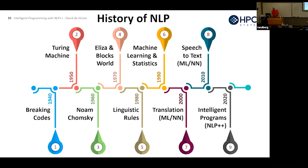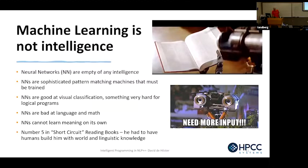Machine learning really started in the 1990s and has grown to what it is today. Translation really started in the 2000s — more machine learning, neural networks, a lot of training. We got speech recognition through the 2000s, so translation, speech, and NLP got really good. And I'm claiming now that we're going to be entering a new phase of intelligent programs, and part of the reason is the programming language NLP++.